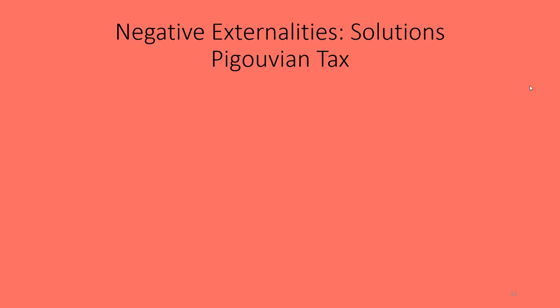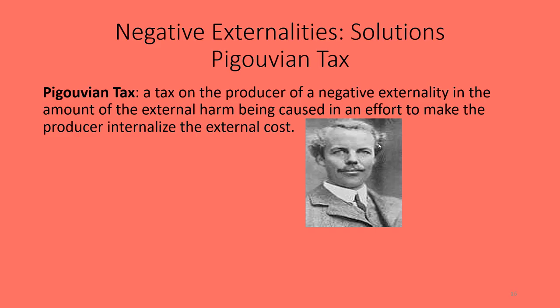The first solution we're going to talk about is the Pigouvian tax, invented by economist Arthur Cecil Pigou. Pigou's most famous work was The Economics of Welfare, published in 1920. He actually drove an ambulance during World War I, and from that experience started thinking about how people's actions affect others. He began doing work on total welfare and the problems created by externalities, as well as potential solutions. A Pigouvian tax is a tax on the producer of a negative externality equal to the amount of external harm caused, in an effort to make the producer internalize that external cost.